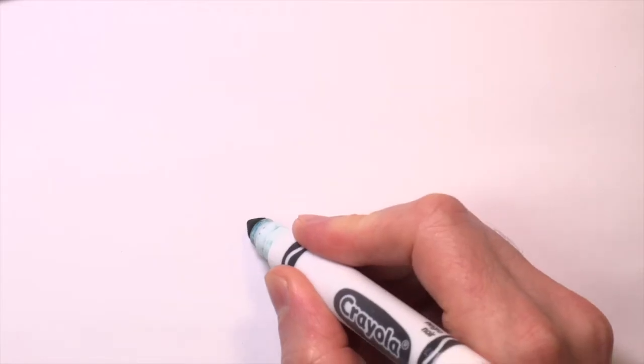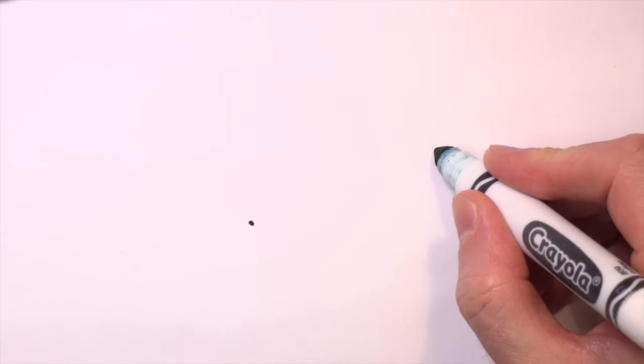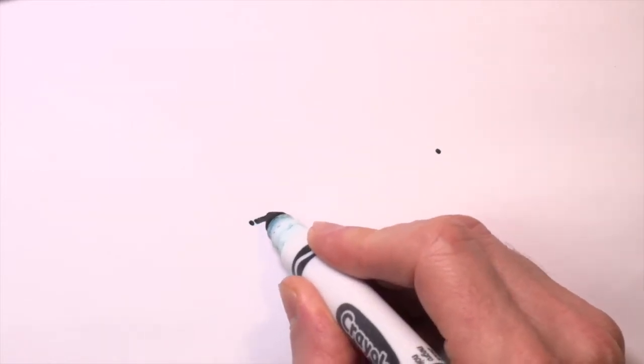Today I'm going to take a marker and make a dot and another dot, and now I'll draw a line to connect them. There are a lot of different ways to go from one point to another. I can make a straight line,